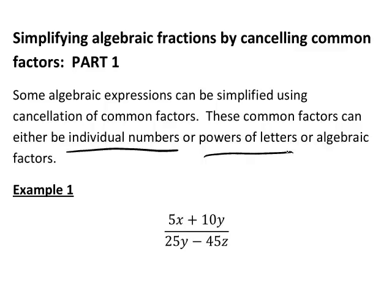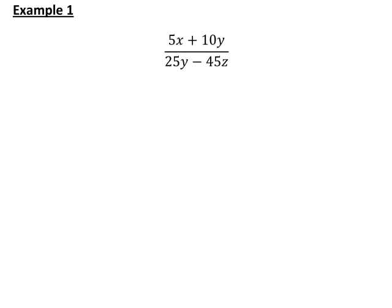Starting with this first example, suppose we want to simplify if possible (5x + 10y) divided by (25y − 45z). If we are going to be able to use cancellation to simplify this, a number or letter must be a factor of each individual term on both the numerator and the denominator.